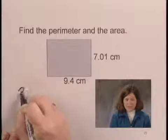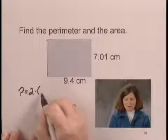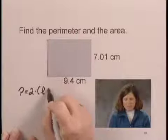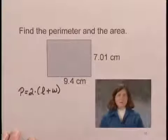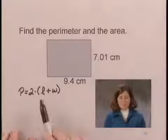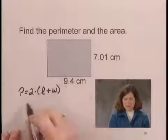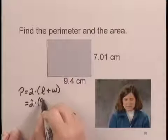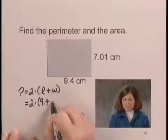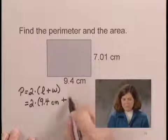We have P equals 2 times the quantity length plus the width. Once we have the formula written, we can substitute a number for the length and the number for the width. The length is 9.4 centimeters, so we have 2 times 9.4 centimeters plus the width is 7.01 centimeters.